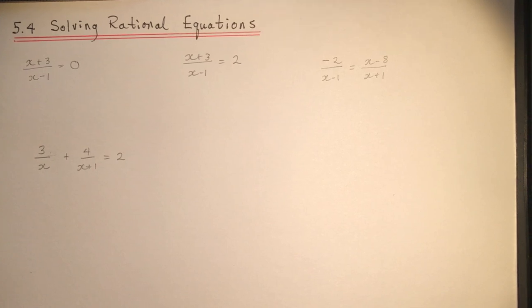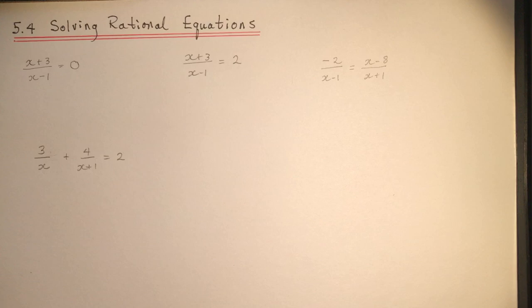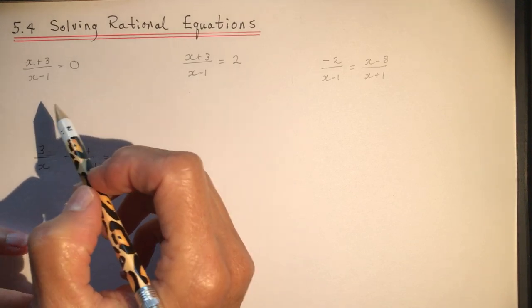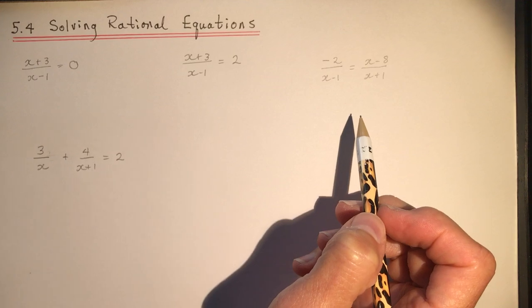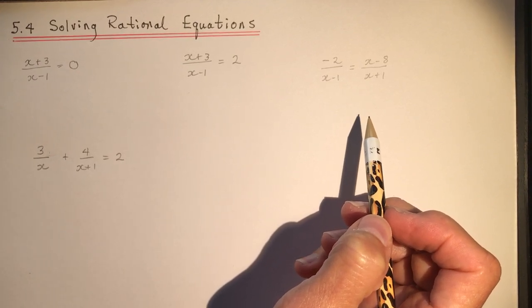5.4 solving rational equations. We're going to follow along with some examples and get into some of the word problems that the textbook tries to create. The first one sounds really confusing when it really isn't, so let's straighten out those different types of word problems that you might see on a test. We'll start with a couple of examples — some of these are from your textbook homework.